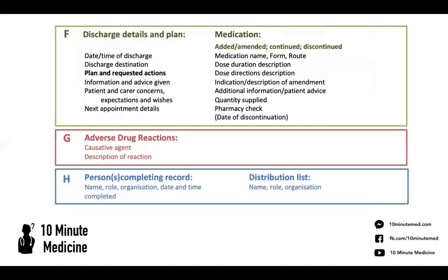Moving on to discharge details and plan: date and time of discharge, discharge destination — some places will auto-populate that, in others you need to do it yourself. Then plan and requested actions: you need to make clear what you want the GP to do, what the hospital is doing for follow-up, what your team is organising, and what other teams have planned. These should be clearly documented because this is the section the GP will take specific care of to ensure anything they need to do gets picked up.